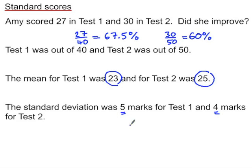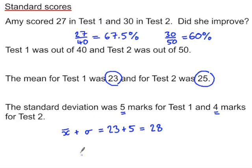We compare the two assessments by seeing how many standard deviations above the mean Amy's score was. In test 1, the mean plus one standard deviation is 28, and Amy scored 27 — just under one standard deviation above the mean. For test 2, the mean plus one standard deviation is 25 plus 4, which is 29, and Amy scored 30 — just over one standard deviation above the mean. So it looks like she did improve between test 1 and test 2.